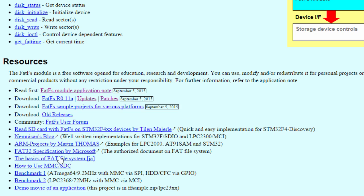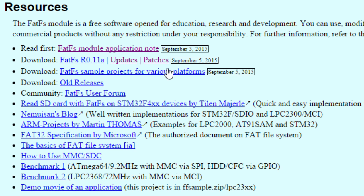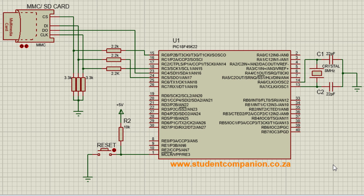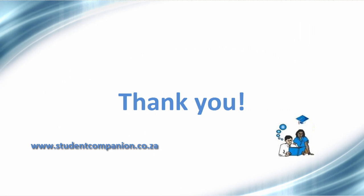At the bottom of the page there are also a couple of resources you can download to get started. You can download the library files by clicking on the link — the last update was September 5, 2015. There are also simple example projects for various platforms. This concludes part 2, where we introduced you to the popular FatFS library for use with the MPLAB XC8 compiler. In part 3, we're going to create a simple project using the PIC18F45K22 to create a file on an SD card and write some data to it. Thank you for watching — don't forget to subscribe for more tutorials.